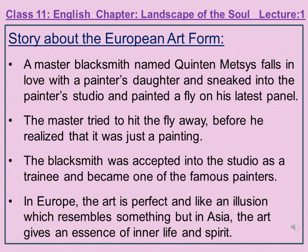Now we'll read the lines from the book again. In 15th century Antwerp, a master blacksmith called Quentin Mestace fell in love with a painter's daughter. The father wouldn't accept a son-in-law in such a profession. So Quentin sneaked into the painter's studio and painted a fly on his latest panel with such delicate realism that the master tried to swat it away before he realized what had happened. Quentin was immediately admitted as an apprentice into his studio. He married his beloved and went on to become one of the most famous painters of his age.